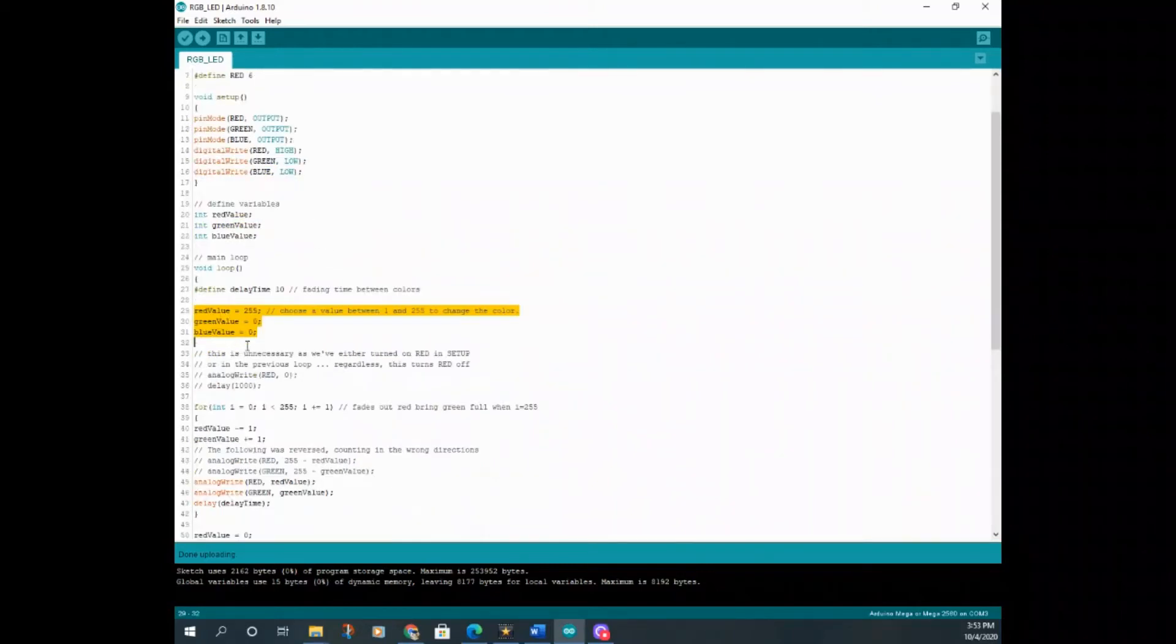This function here takes three arguments, one for the brightness of red, one for the brightness of green, one for the brightness of blue, where zero means off and 255 means maximum brightness.